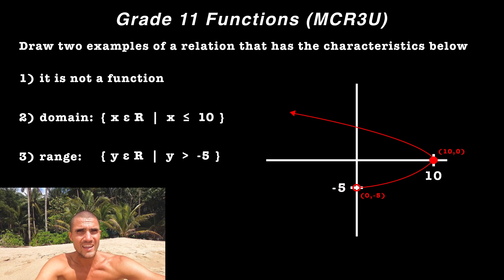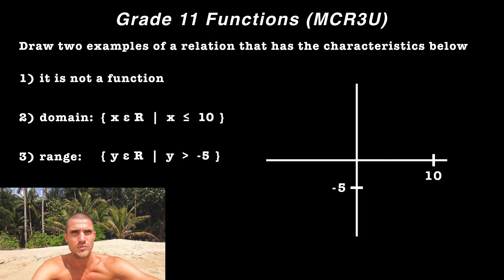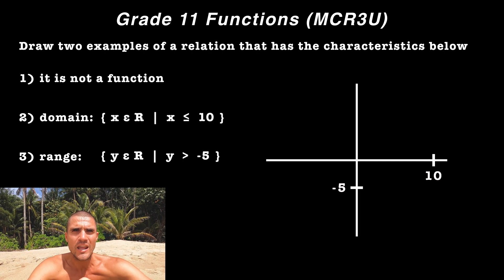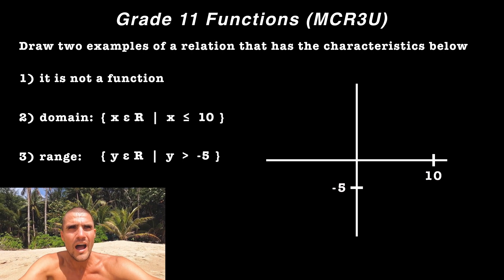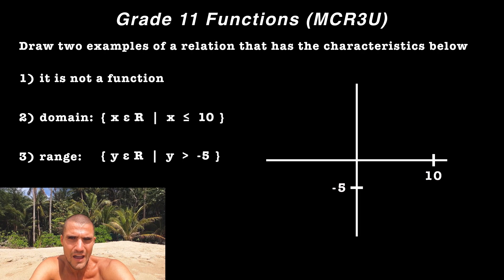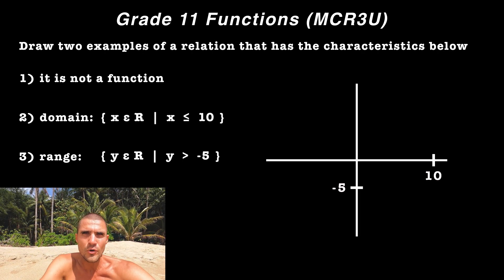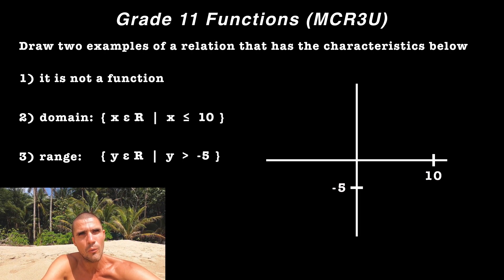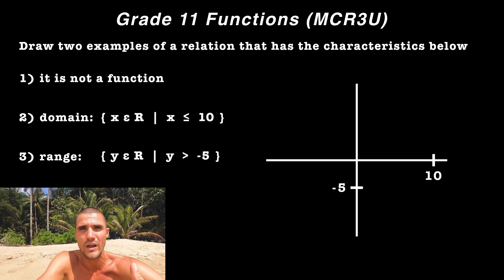So what would a second example be? Again, multiple ways we can draw this relation with these characteristics. What I think I'm going to do is deal with the range another way. And if we have a range where Y > -5, so one way to deal with that is to put a hole there, but what's another way that we can represent this range where it's not going to touch that Y value of negative five, but it's going to include all the Y values that are greater than that?